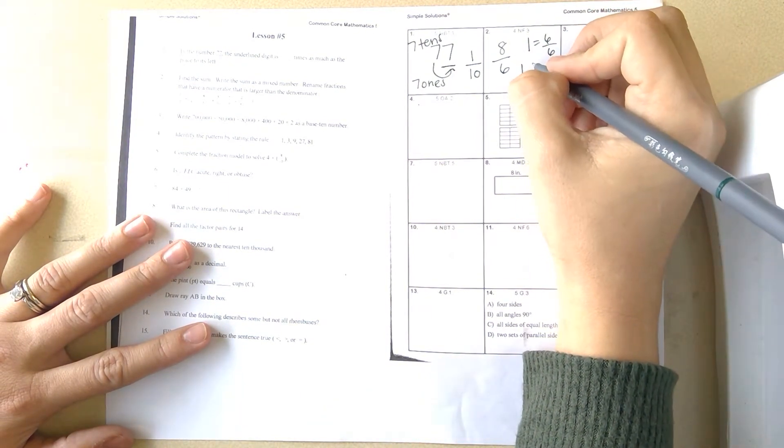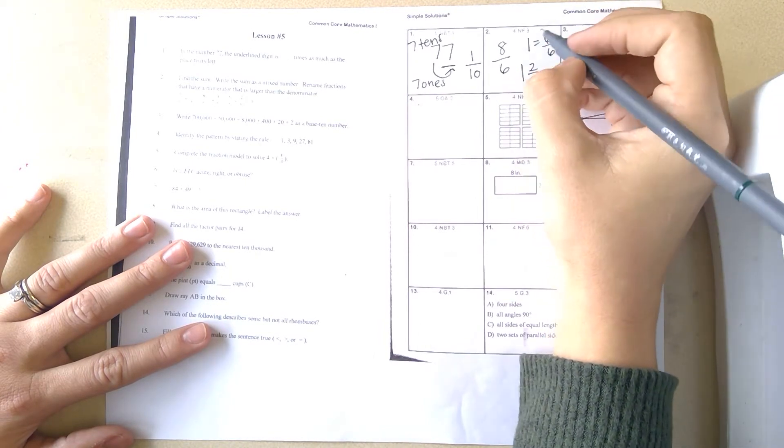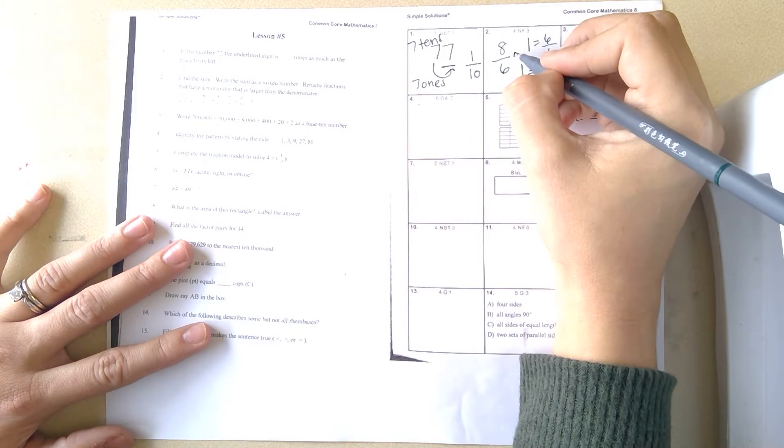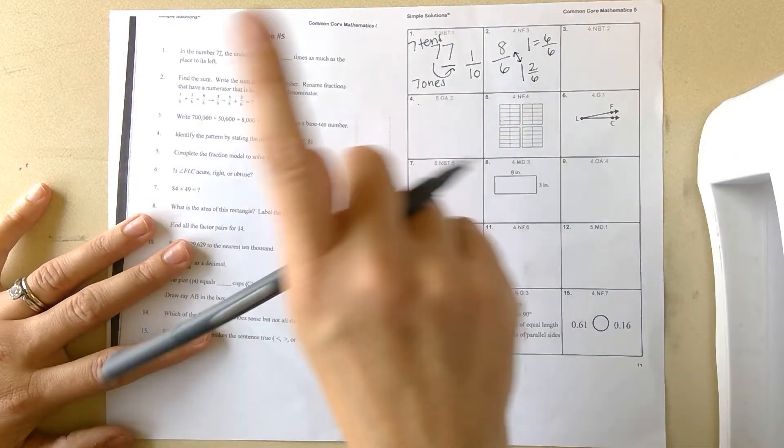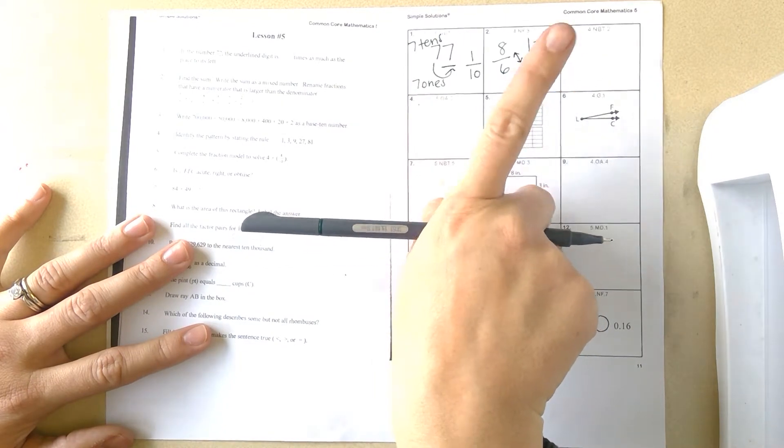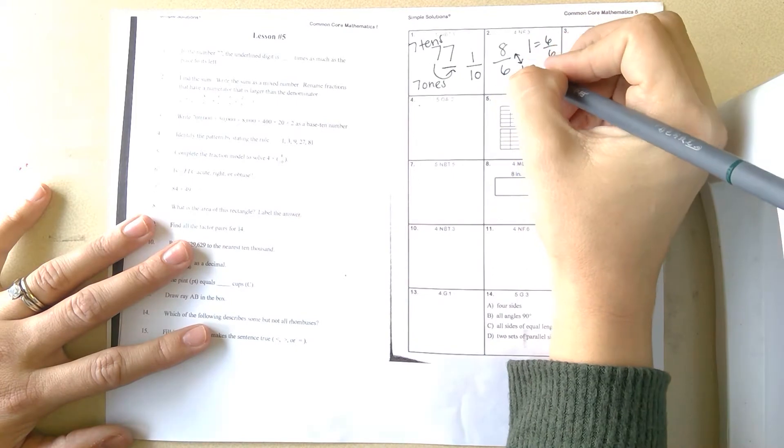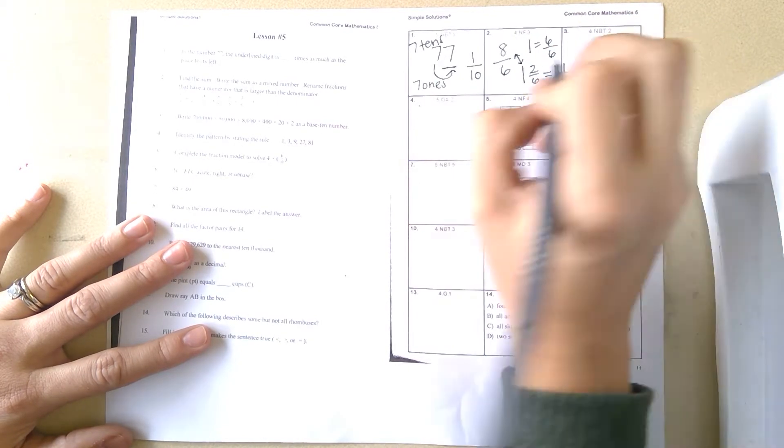It would be the same: one and two-sixths. These two would be equal. If you want to simplify that fraction, it would be one-third. So eight-sixths would equal one and two-sixths, which would also equal one and one-third.